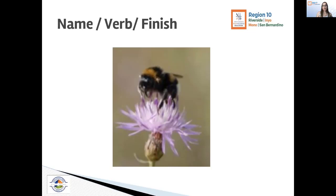I've given you some vocabulary words you might want to use — this is a honey bee, this is a thistle. These are different words that may be popping up in a story we'll visit next. Maybe it came up in your questions: what kinds of flowers do bees land on? Let's try it again with another one. We want to use name it, verb it, finish it.